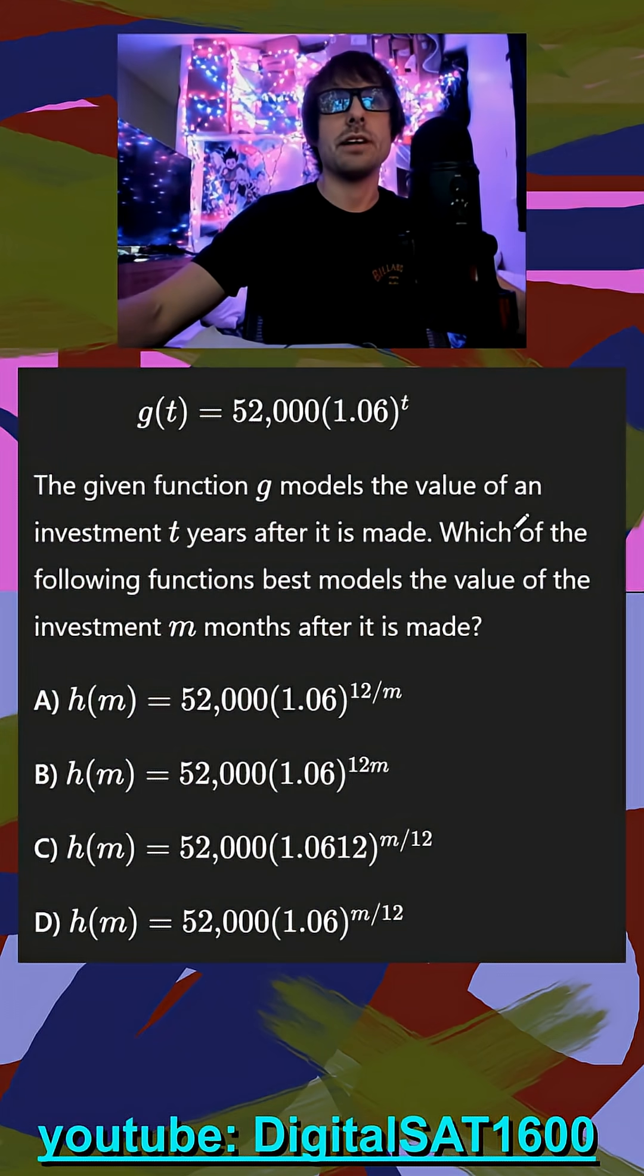The given function g models the value of an investment t years after it's made. Easiest way to think about this is when t is equal to 1, our 52,000 is going to increase by 6%. Which of the following functions best models the value of the investment m months after it's made?